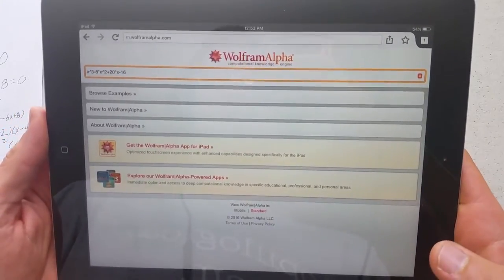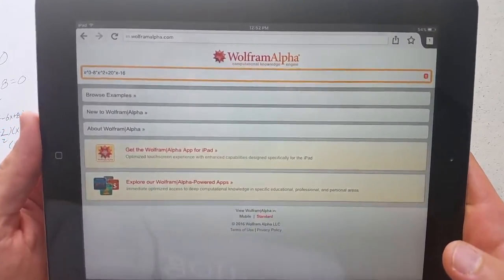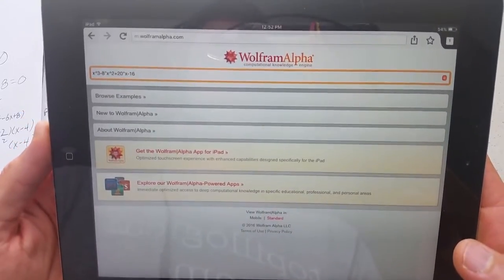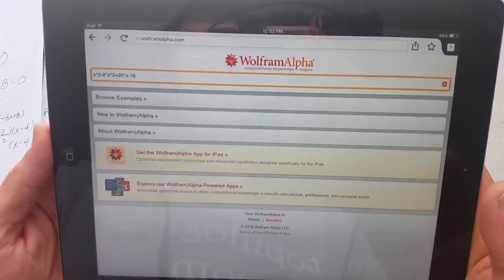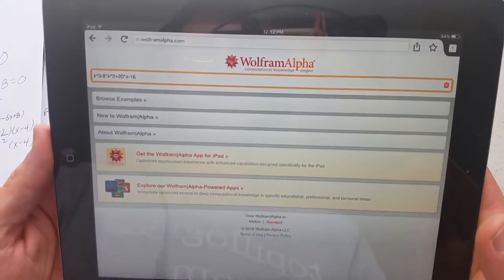It's free. You can access it on your phone, computer wherever you want. It's wolframalpha.com and what you do is a computational knowledge engine.